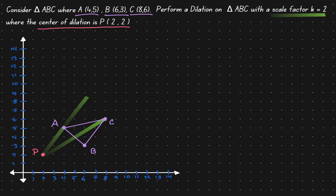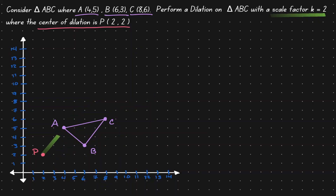The same goes with P to C — we want to double it. Then from P to B, and then we want to double it. So let's find the distance from P to A. Notice this diagonal distance is a little bit difficult to find, so instead let's consider the horizontal displacement and the vertical displacement. We move two units to the right and three units up. Repeating that displacement starting at A — two units to the right and three units up — at this location we can find the image of A. Let's call it A prime.